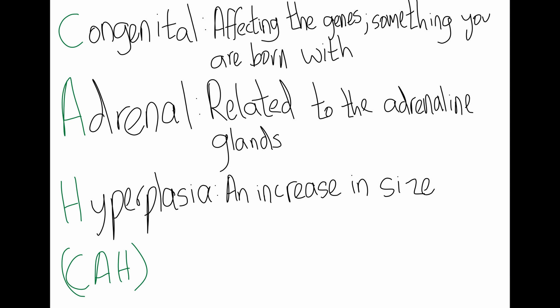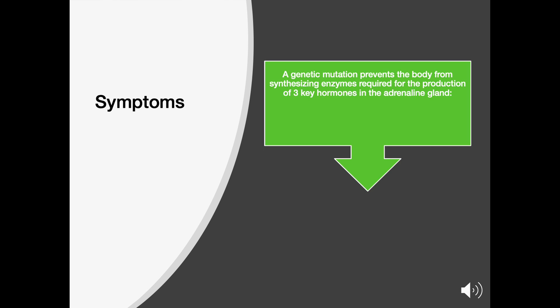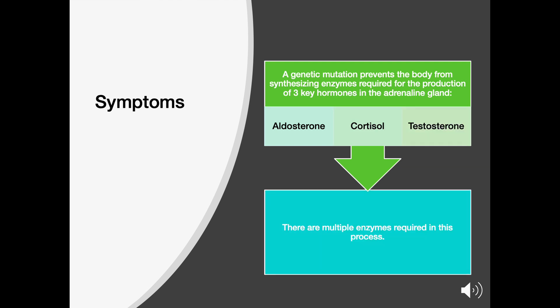In conclusion, CAH is a genetic disorder that causes the adrenal glands to increase in size. A genetic mutation prevents the body from synthesizing key enzymes required for the production of three hormones in the adrenal gland: aldosterone, cortisol, and testosterone. There are multiple enzymes required in this process. Let's take a look at the steroid pathway that governs this.